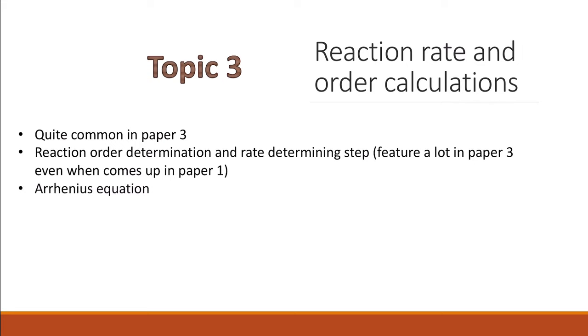Arrhenius equation, if it didn't come in Paper 1, then probably the reaction rate and you could have the Arrhenius equation this time. The Maxwell-Boltzmann distribution curve, if it didn't come up in Paper 1, then this is the one that will come up in Paper 3. Make sure that you are covering this topic properly, especially the things that didn't come up in Paper 1.